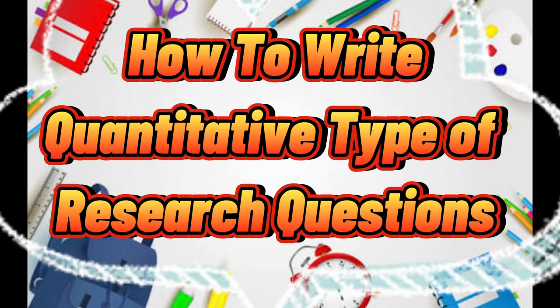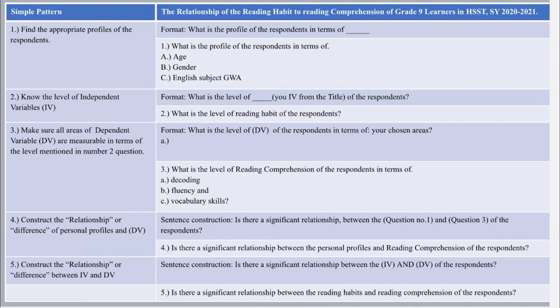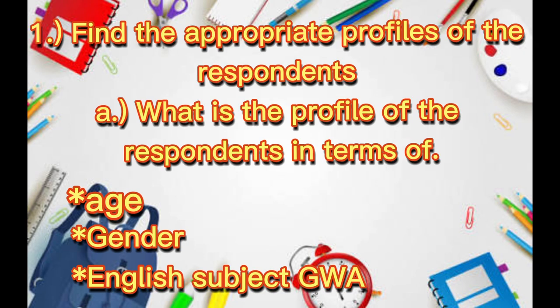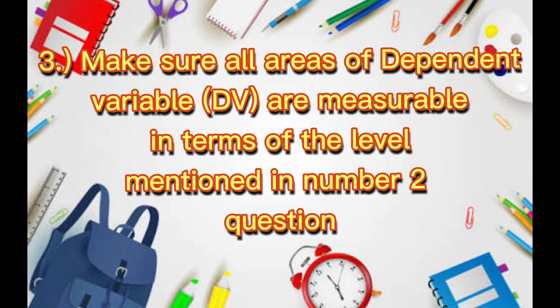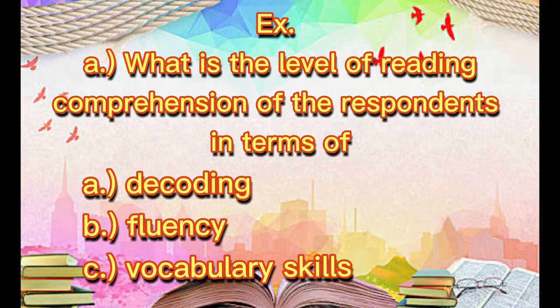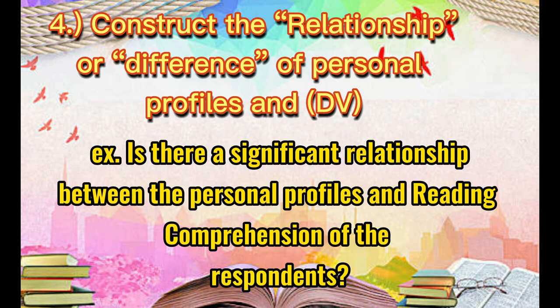How do we write quantitative type of research questions? Follow the format provided in the table. For example: 'What is the profile of the respondents in terms of age, gender, and English subject GWA?' Number two, know the level of your independent variables. Number three, make sure all areas of the dependent variable are measurable in terms of the level mentioned in question two. For example: 'What is the level of reading comprehension of the respondents in terms of decoding, fluency, and vocabulary skills?' Number four, construct the relationship or difference of personal profiles and dependent variable. For example: 'Is there a significant relationship between the personal profiles and reading comprehension of the respondents?'